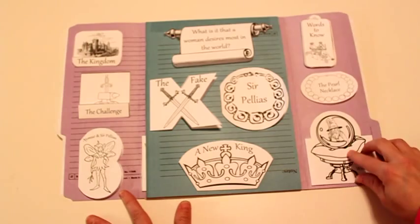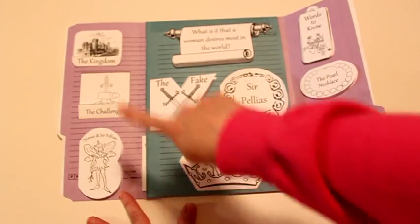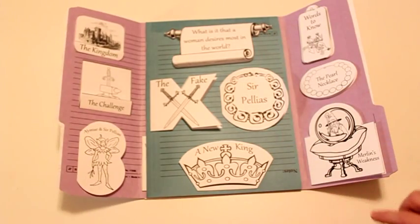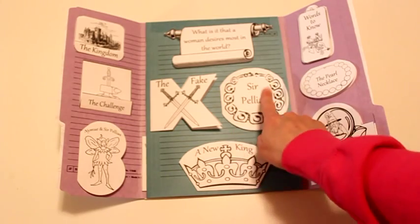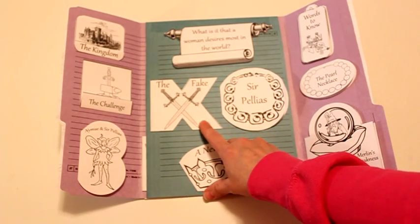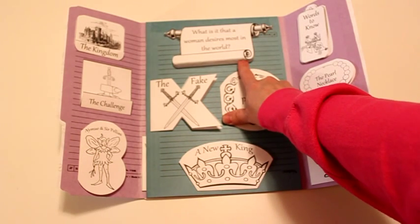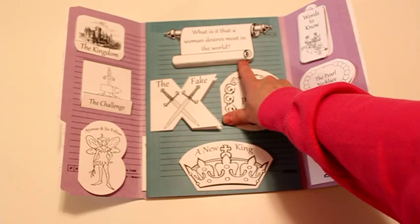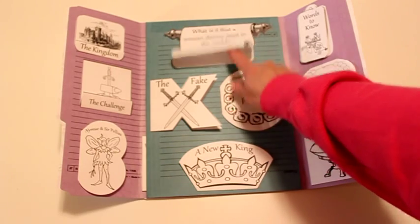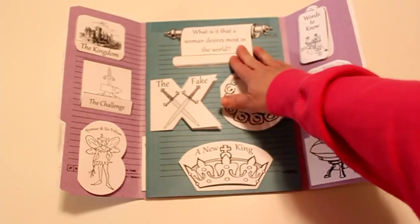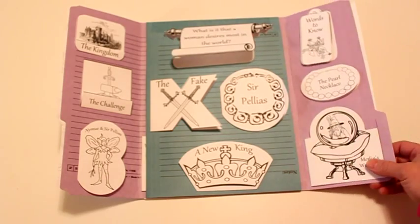You'll see that there are several little mini books included, and for each one of these mini books, they're going to answer a comprehension question that goes with whatever chapter they just read. This one is the final one, and it's what is it that a woman desires most in the world, and it's of course her will. If any of you have read the story before or know anything about King Arthur.